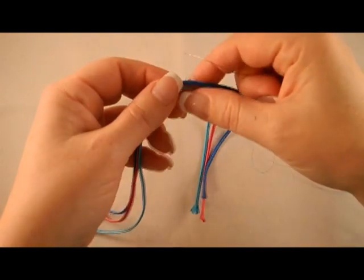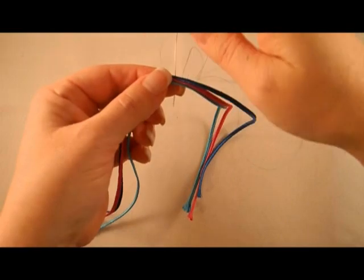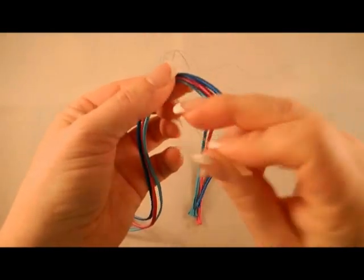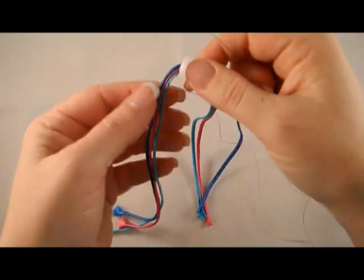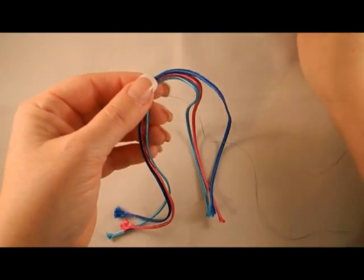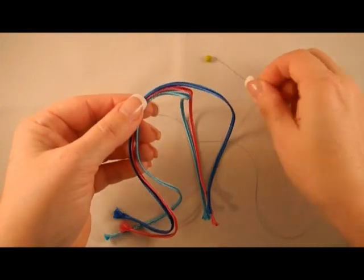You'll notice that I'm making larger stitches on the top of the stack and smaller stitches on the bottom of the stack. This is because I'm going to begin to curve the soutash. You always want the long stitches on the outside of the curve and the short stitches on the inside of the curve.